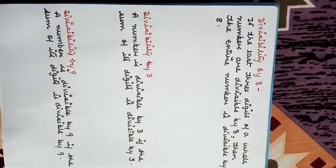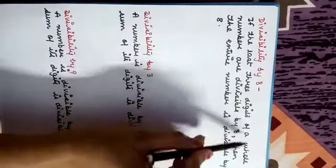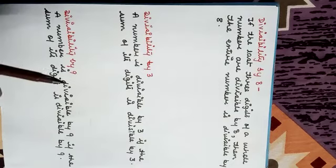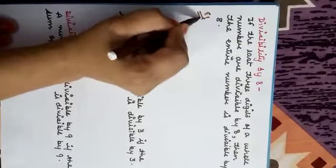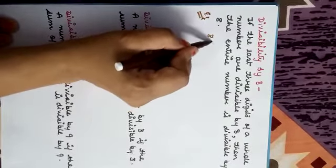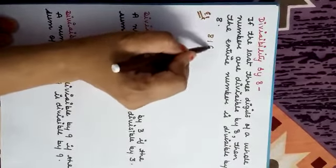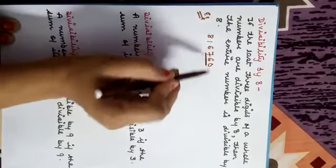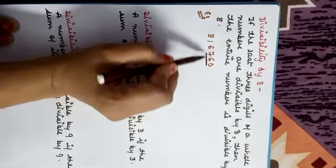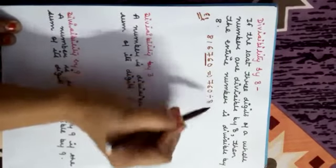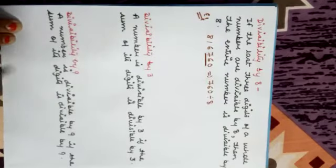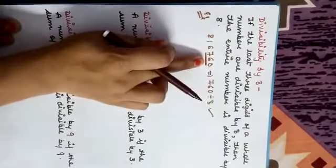Divisibility by 8: If the last three digits of a whole number are divisible by 8, then the entire number is divisible by 8. For 4, we checked the last two digits; for 8, we check the last three digits. Example: 8,16,760. The last three digits are 760. Is 760 divisible by 8? Yes, it is divisible by 8, so the complete number is divisible by 8.